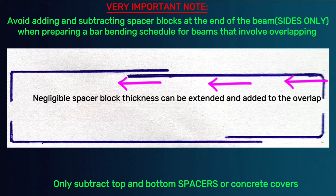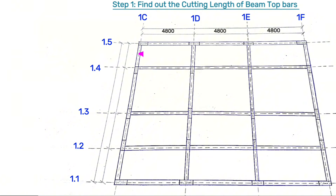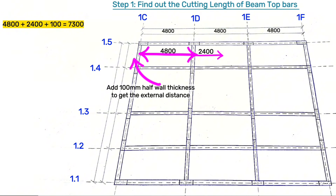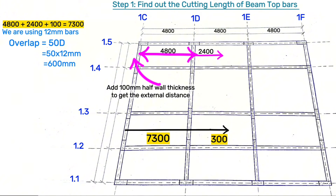Step one is to find out the cutting length for beam top bars from gridline 1C to gridline 1D. It is 4.8 meters plus 2.4 meters up to the center — this is 7.2 meters. Add 100 millimeters to get the external distance: 7.2 meters plus 100mm gives 7.3 meters. This 7.3 meters stops at the 2.4 meters mark. Then add 300 millimeters for the overlap — since we are using 12mm diameter bars, we add 300mm extra on one bar and 300mm on another bar to get a total overlap of 600mm. Therefore, 7.3 meters plus 300mm gives 7.6 meters as the total cutting length.